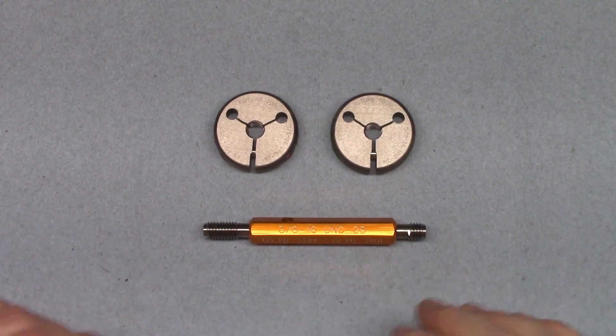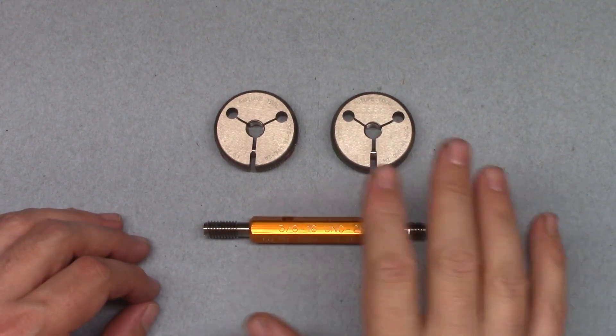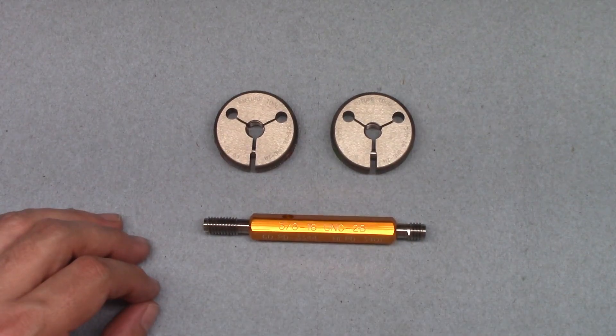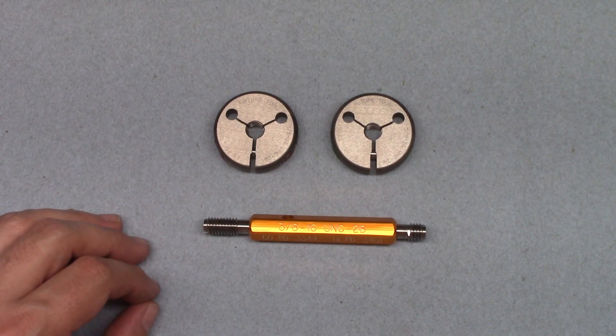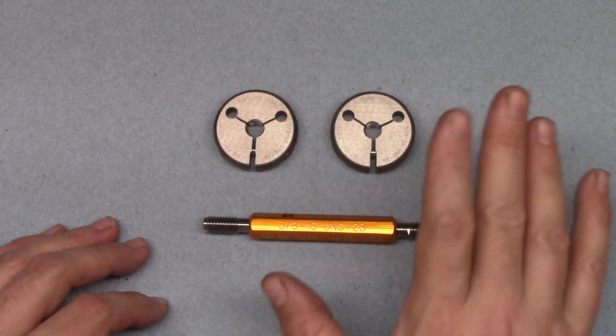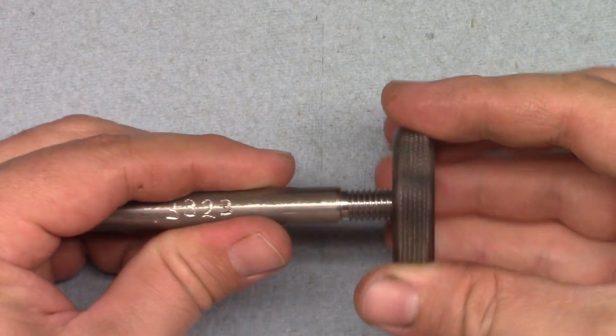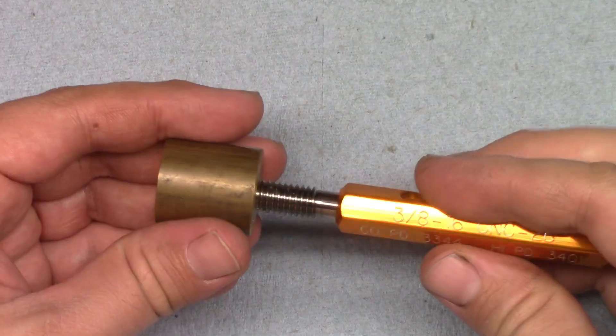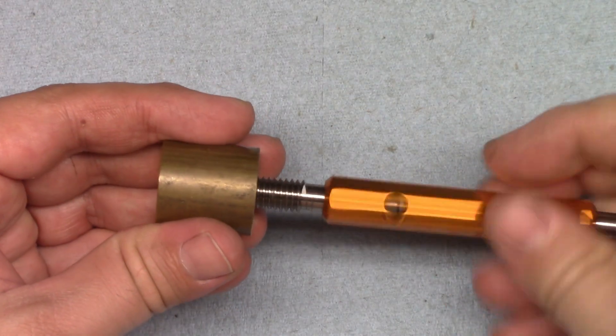Hi everyone. Today I'd like to talk about how to check threads with ring and plug gauges. These are used to quickly and reliably do quality control on threaded parts, especially in high production environments. The ring gauges are used on external threads, while the plug gauges are used for internal threads.